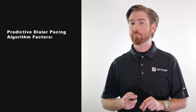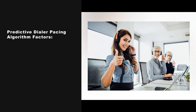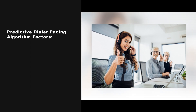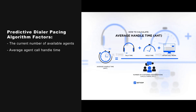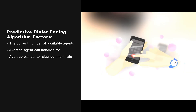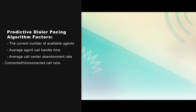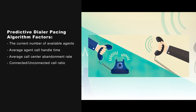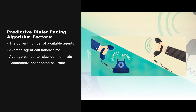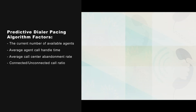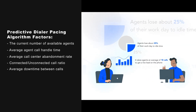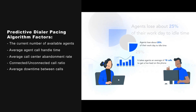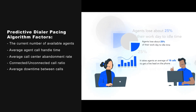A predictive dialer works by developing a call pacing algorithm that predicts agent availability, automatically adjusting dialing speed according to factors like the current number of available agents, average agent call handle time, average call center abandonment rate, connected to unconnected call ratio — the number of calls that successfully connected an agent and customer versus the number of calls that failed to connect — average downtime between calls, the number of rings before a customer answers, and voicemail message length.